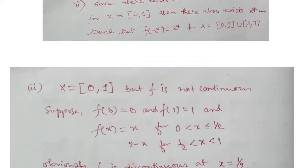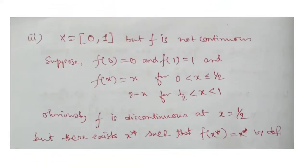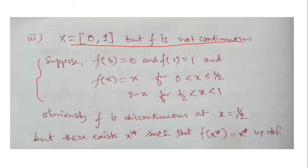Moving to the next case: X = [0,1] but f is not continuous. Not continuous is important here. We prove this by giving a counter example. Define f(0) = 0, f(1) = 1, and f(x) = 0.1 otherwise, so f is defined in this discontinuous way.